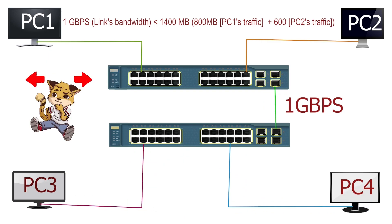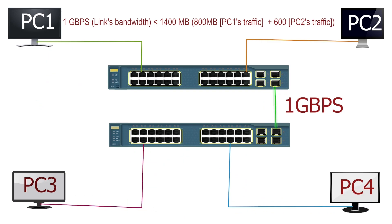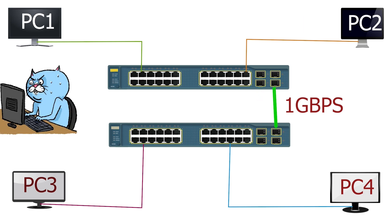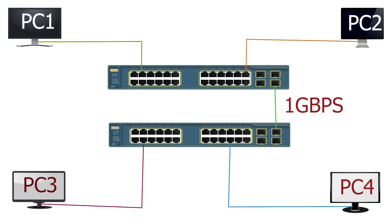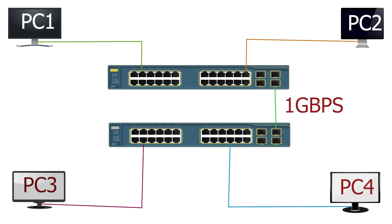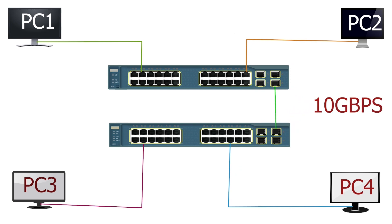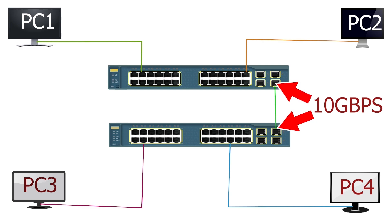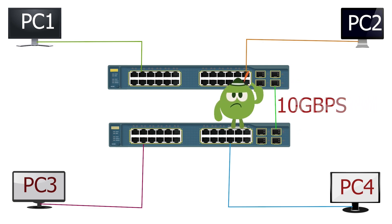Administrators have two solutions to this problem. They can replace the link with a higher bandwidth link, or use an additional link. The first solution is less suitable — it requires supporting ports on both switches. For example, if the administrator wants to replace it with a 10GB per second link, both switches must have a 10GB per second port. In the absence of it, the administrator can't use this option.